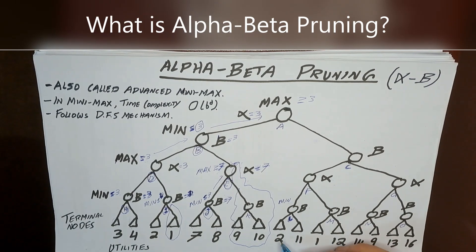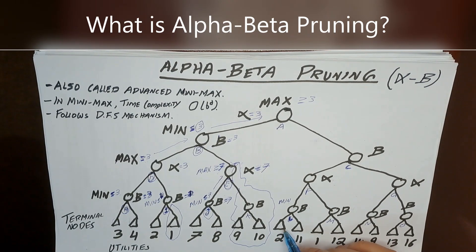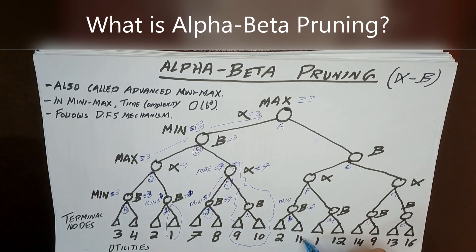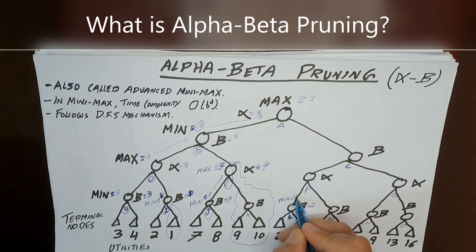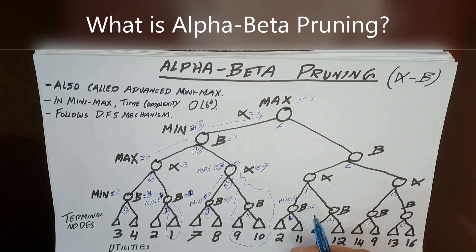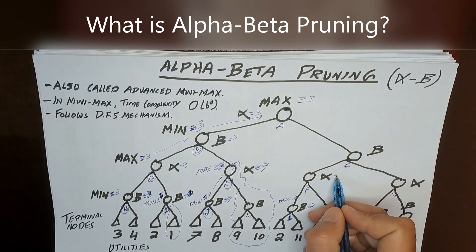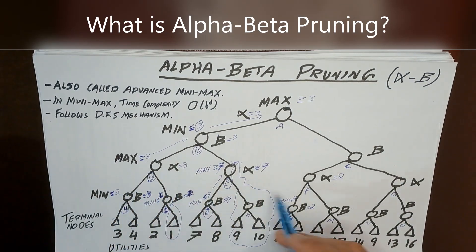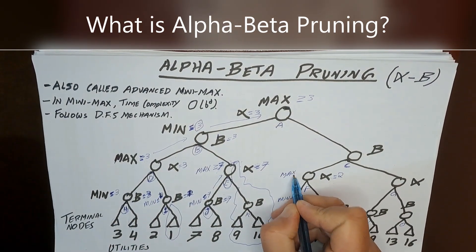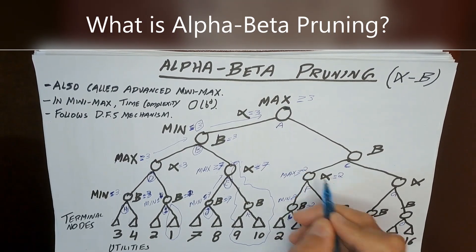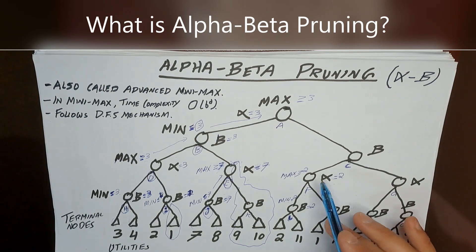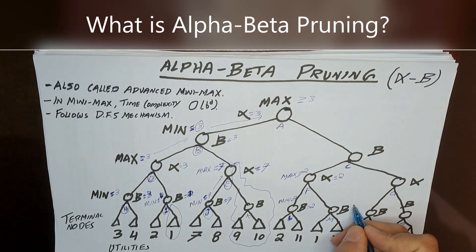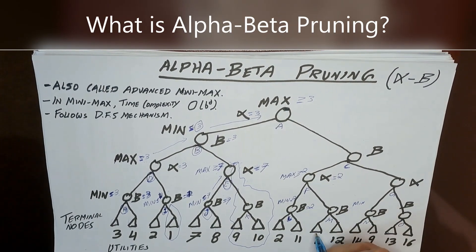Max now has value 3 but wants something even greater. So Max will search values on the right-hand side, hoping to get a higher reward. The search moves from node A to node C, then to node F, then to node L. At node L it is Min's turn. Min first looks at the left-hand side which is 2, so beta becomes 2. Min looks for something smaller on the right-hand side but that value is 11, so the value stays at 2 and is fixed. At node F, alpha becomes 2 and Max will try to get something greater than or equal to 2.